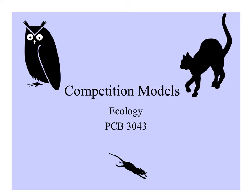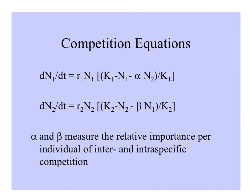We finished up talking about competition with the equations. Let's look at how these equations work in models. Here are the two equations for the growth of species 1 and 2 populations, influenced by the presence of the other species with the competition coefficients alpha and beta.